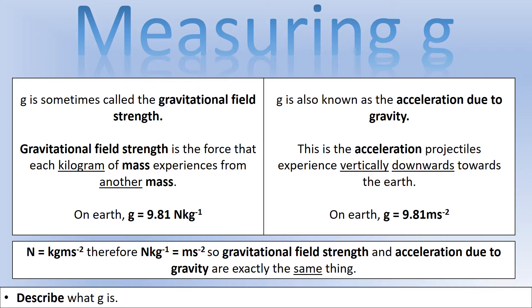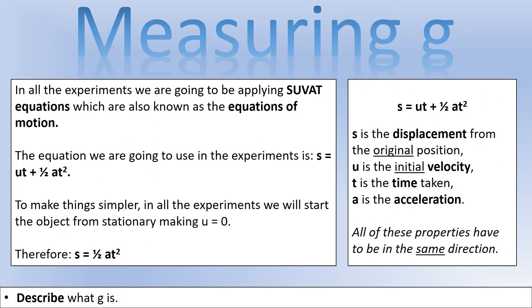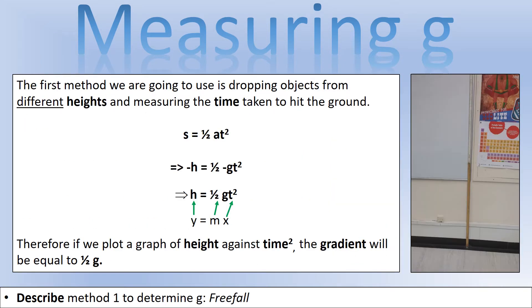We're going to use SUVAT equations, so if you haven't covered those, find out what they are first. We'll use s = ut + ½at², but since we start all objects stationary, it simplifies to s = ½at². In these equations: s is displacement from initial position, u is initial velocity, t is time, and a is acceleration. Critically, all quantities must be in the same direction.